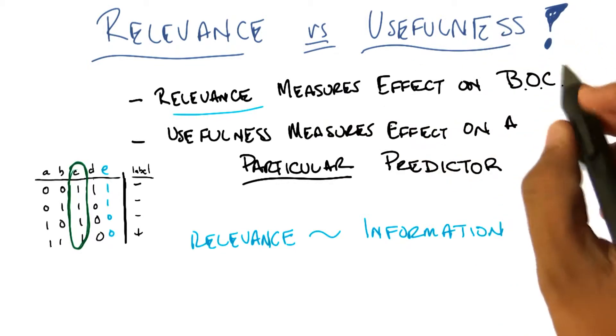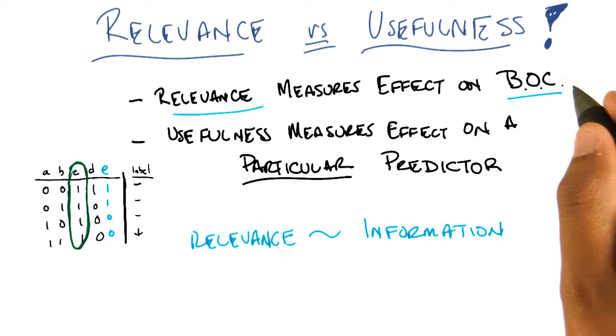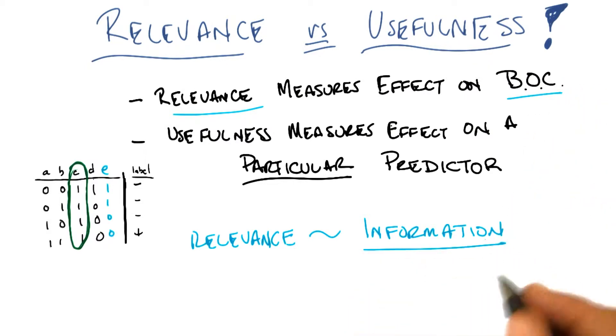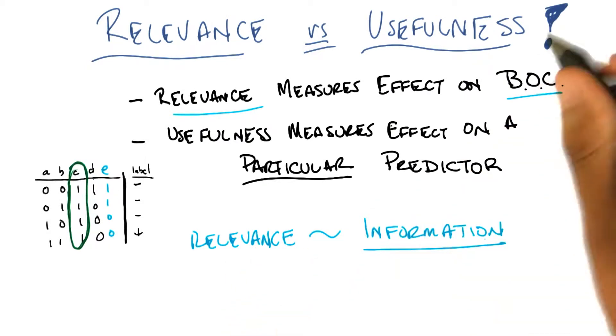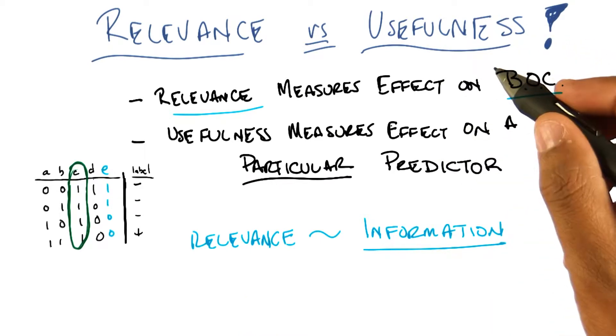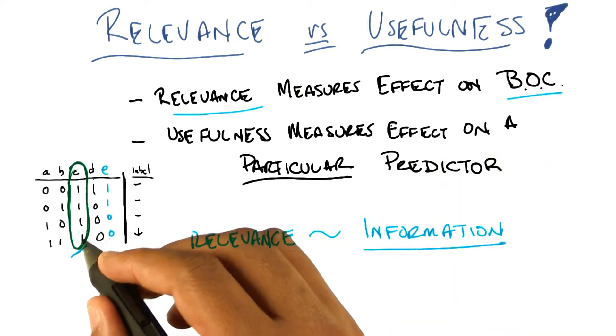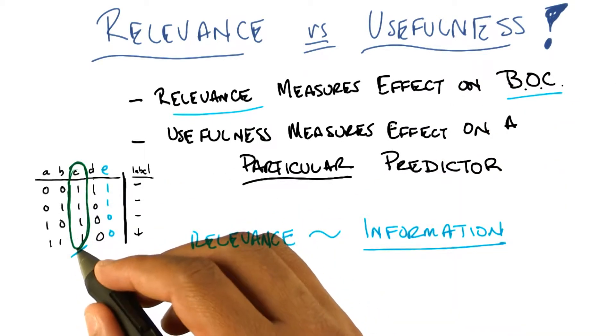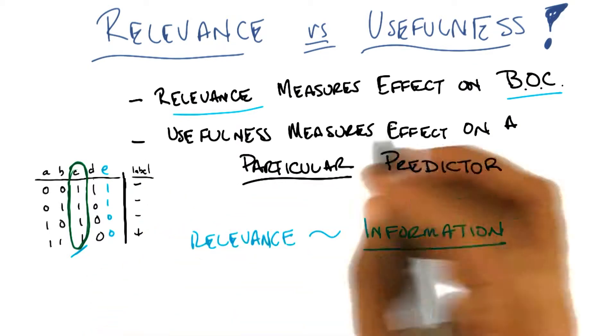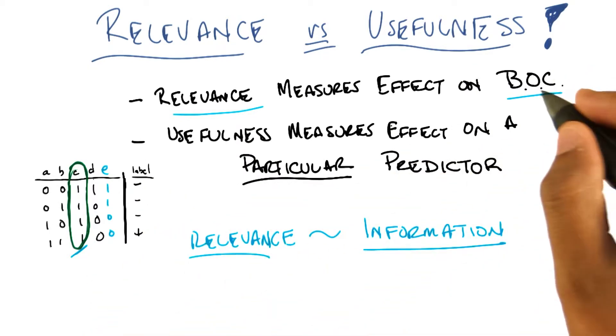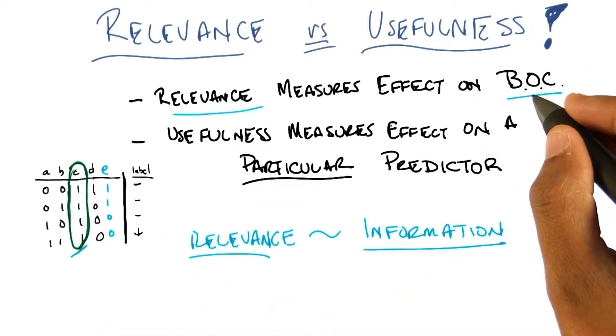So really, from the Bayes Optimal Classifier's point of view, the only thing that matters is how much information a particular variable provides, condition on some label, or just in general. So a variable like C here, which doesn't change, has zero entropy, provides no information, independent of the value of the label, and therefore cannot be relevant to the Bayes Optimal Classifier.